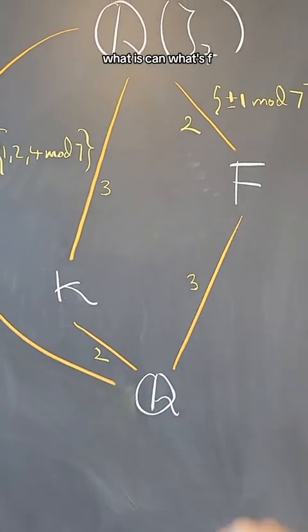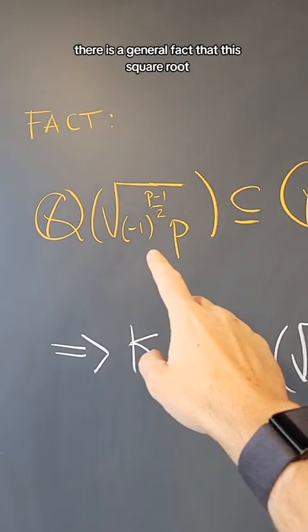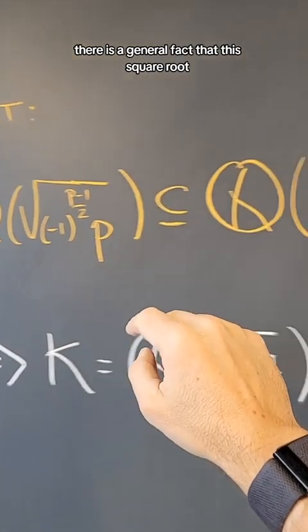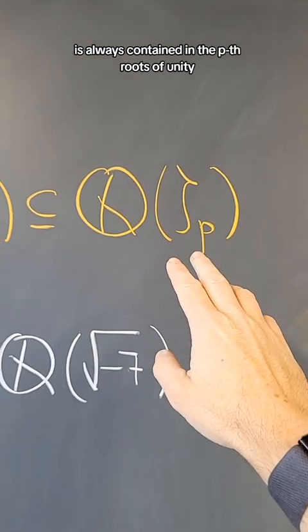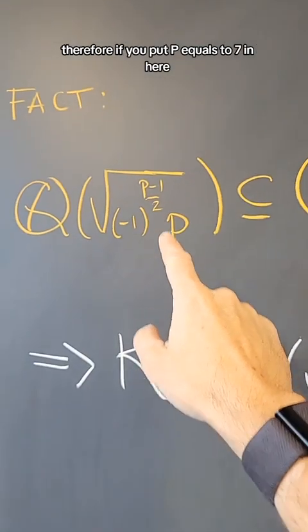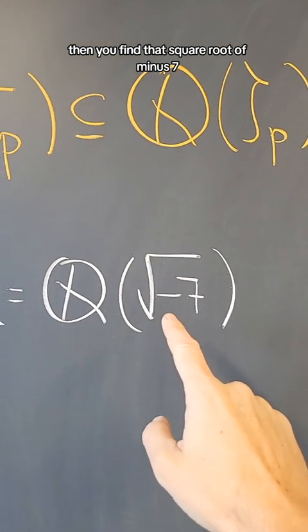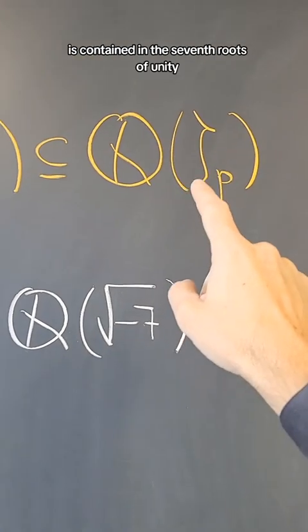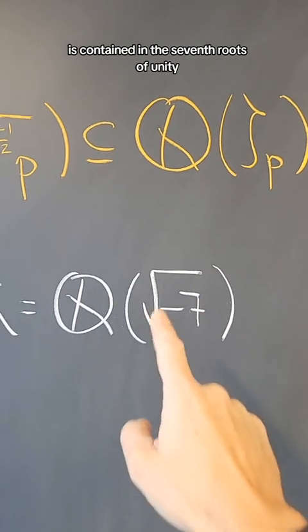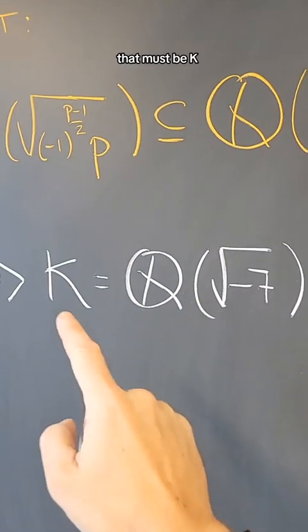So the question now is, what is k and what is f? There is a general fact that this square root is always contained in the pth roots of unity. Therefore, if you put p equals 7 in here, then you find that the square root of minus 7 is contained in the seventh roots of unity.